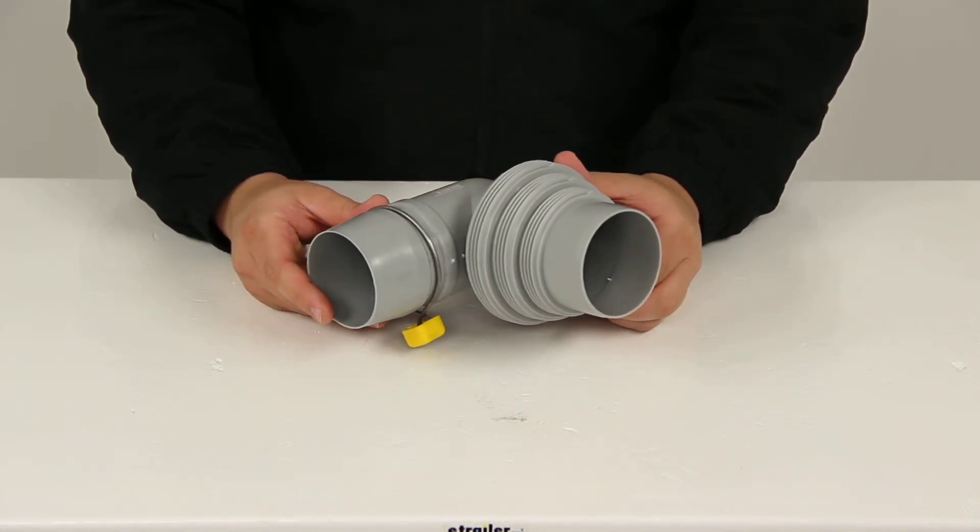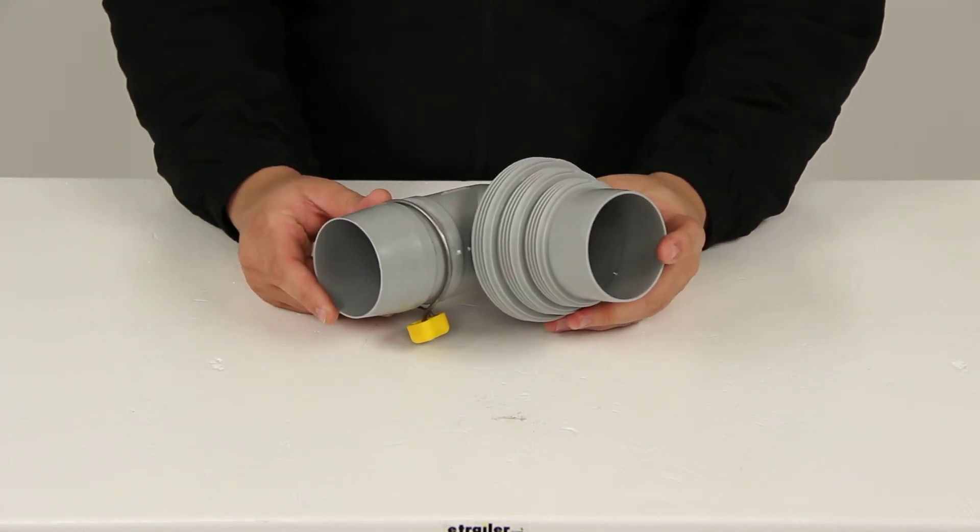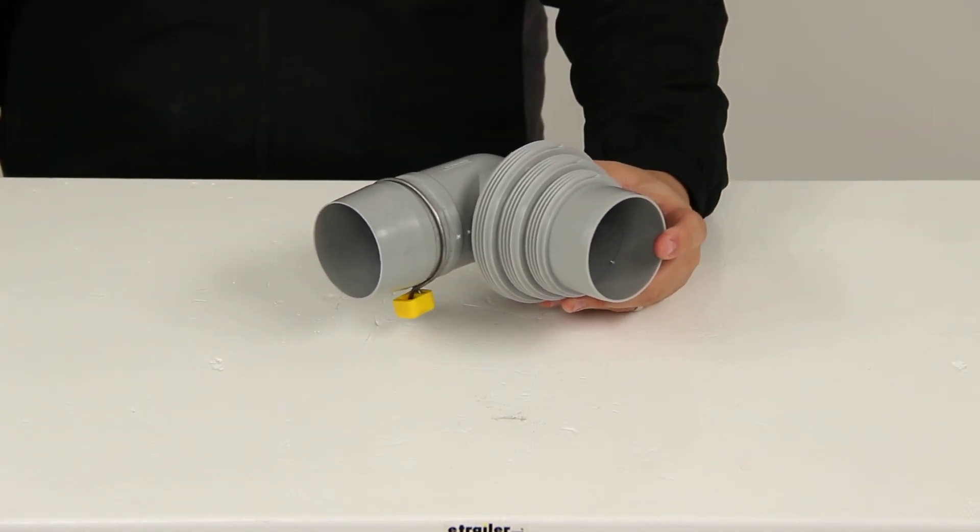That's going to do it for today's review of part number CAM39144. This is the CAMCO Easy Slip Elbow Fitting and 4-in-1 adapter for RV sewer hoses.